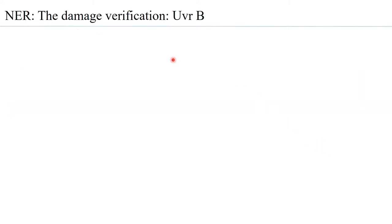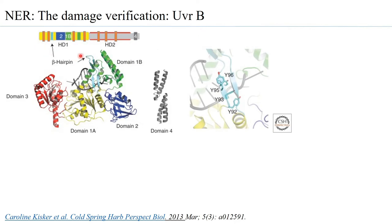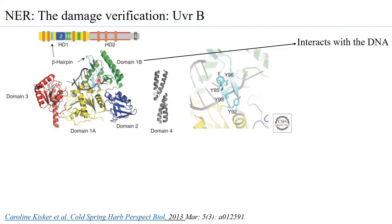The second molecule is UVR-B, which is seemingly verifying the damage that has been recognized by UVR-A. UVR-B has a typical structure with several defined domains: domain 1A, 1B, 2, 3, and 4, which are distinctively present. Domain 1B of UVR-B is observed to interact with the DNA, and domain 2 interacts with UVR-A — that is how UVR-B binds to UVR-A. UVR-A has a UVR-B binding domain, and similarly UVR-B has a UVR-A binding domain.